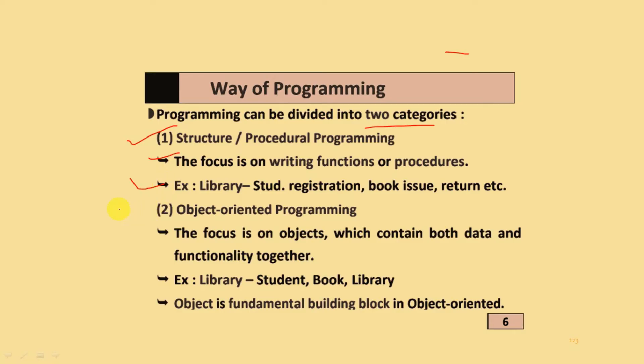In object-oriented programming language, it is focused on objects which contain both data and functionality together. In a library application software, students, books, and libraries are included. Object is the fundamental building block in object-oriented programming language.